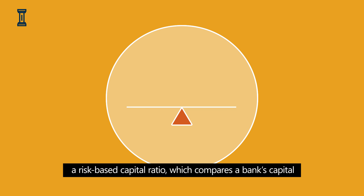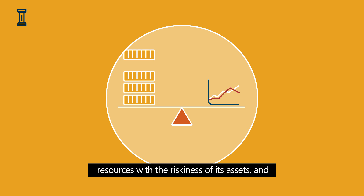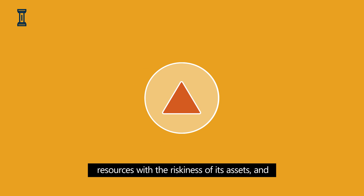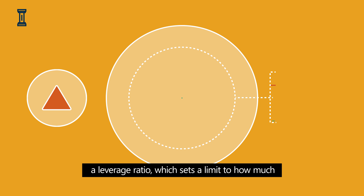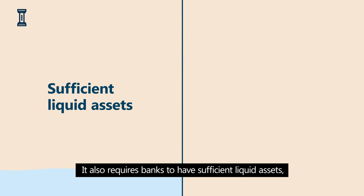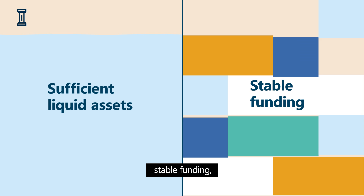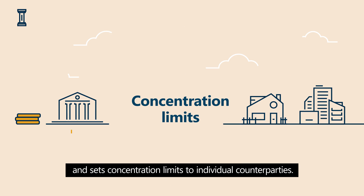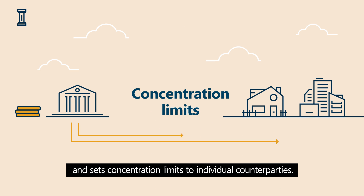A risk-based capital ratio, which compares a bank's capital resources with the riskiness of its assets, and a leverage ratio, which sets a limit to how much debt a bank can take on. It also requires banks to have sufficient liquid assets, stable funding, and sets concentration limits to individual counterparties.